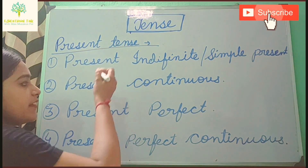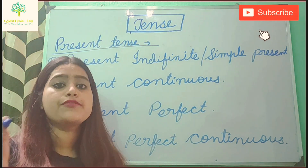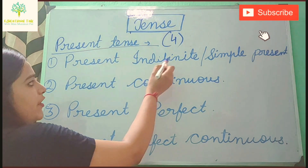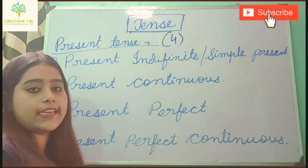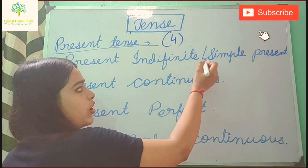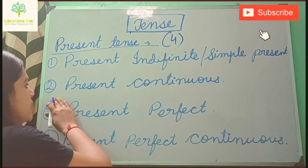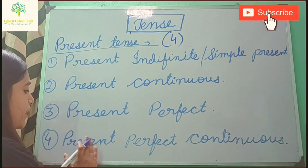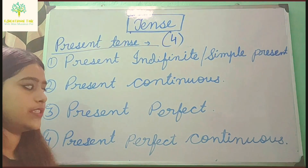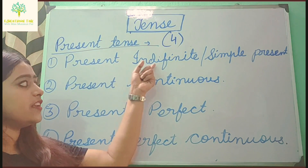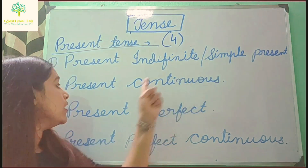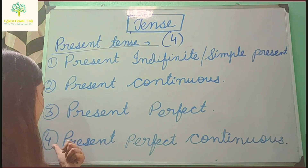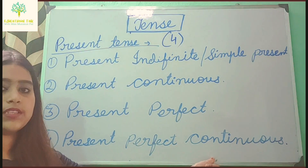Present tense is divided into four parts. First is present indefinite or simple present tense. Second is present continuous tense. Third is present perfect tense. And fourth is present perfect continuous tense.